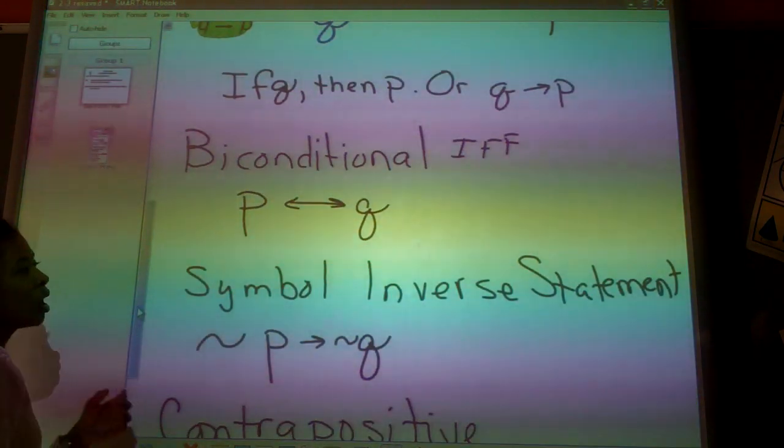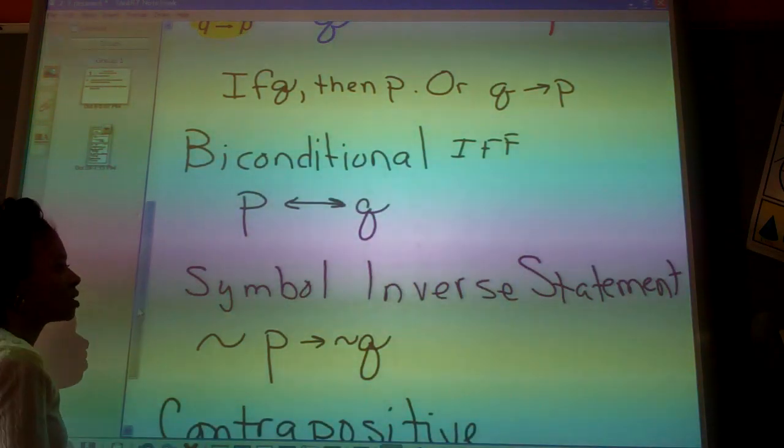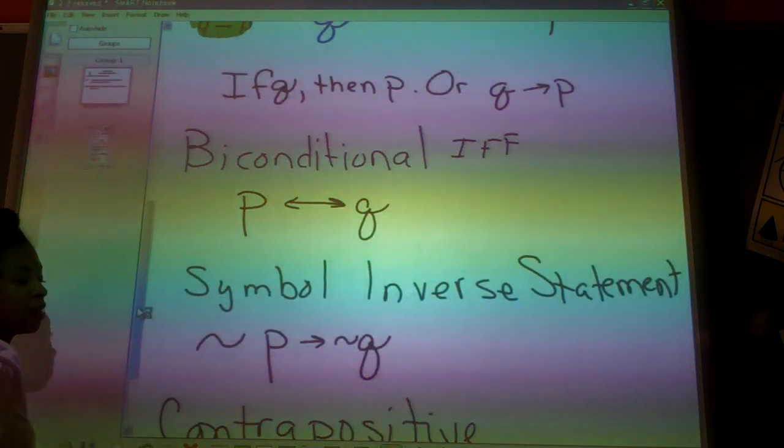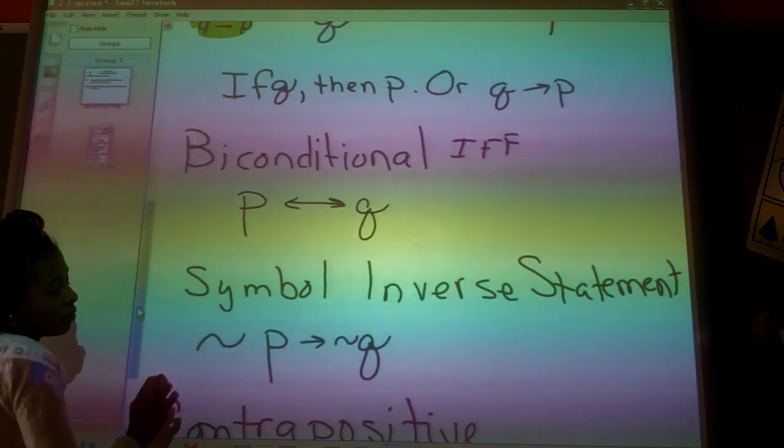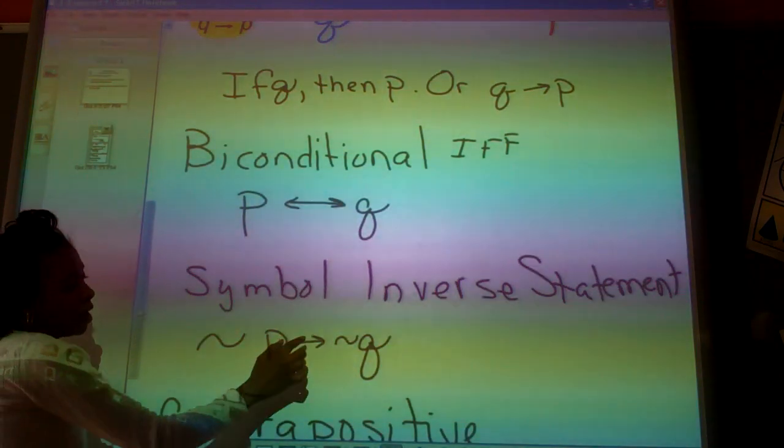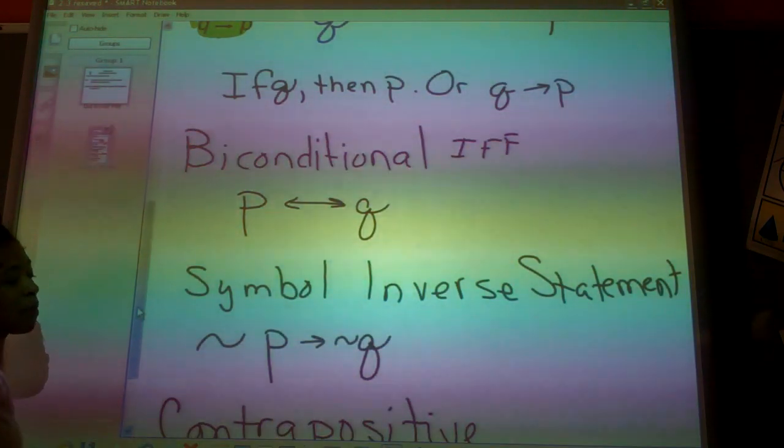Next. Inverse statement. The inverse statement says, I use a little squiggly line to represent the inverse, either inverse or contrapositive. But if I say squiggly line P, arrowhead, squiggly line Q, that's going to be my inverse.